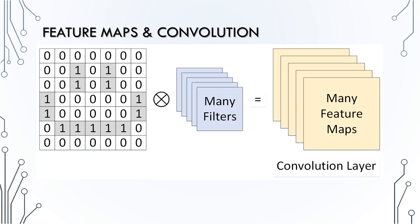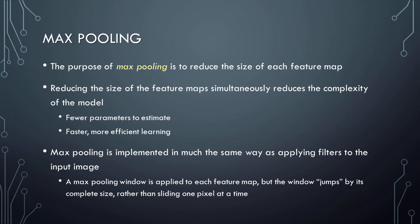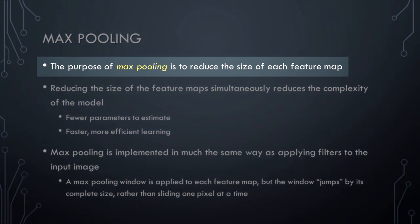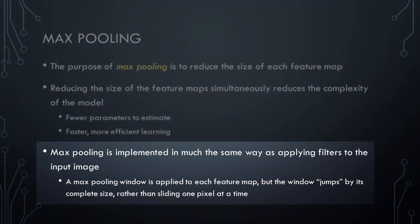Next, let's talk about max pooling. In convolutional neural networks, the purpose of max pooling is to reduce the size of each feature map. Reducing the size of feature maps is important because it simultaneously reduces the complexity of the model — meaning fewer parameters to estimate, which yields faster, more efficient learning. Max pooling is implemented in much the same way as applying filters to the input image. The only conceptual difference is that in max pooling the window jumps by its complete size rather than sliding one pixel at a time.